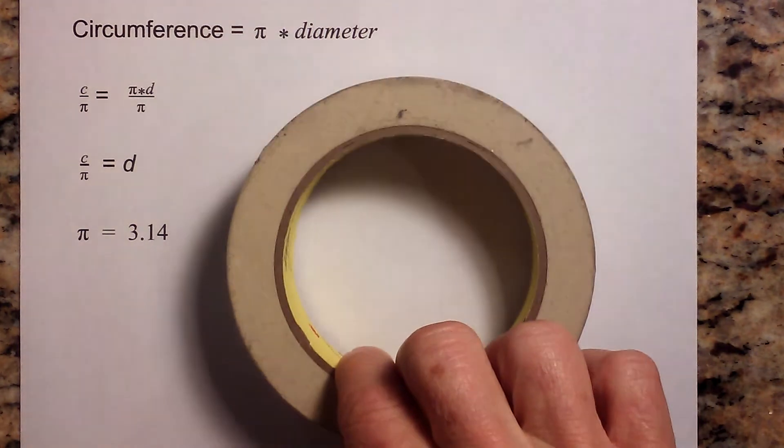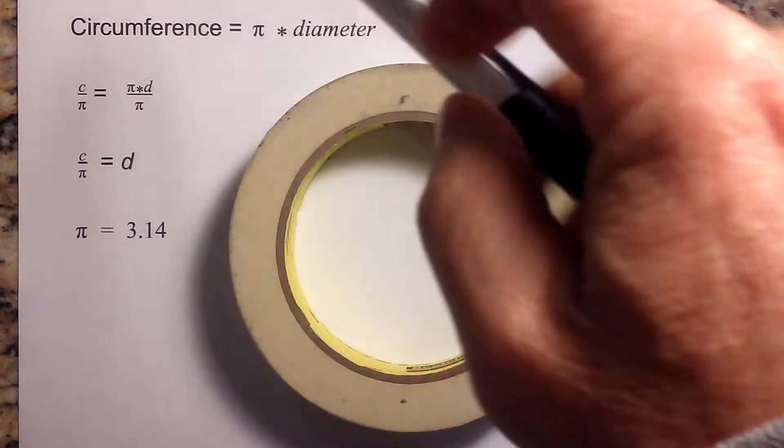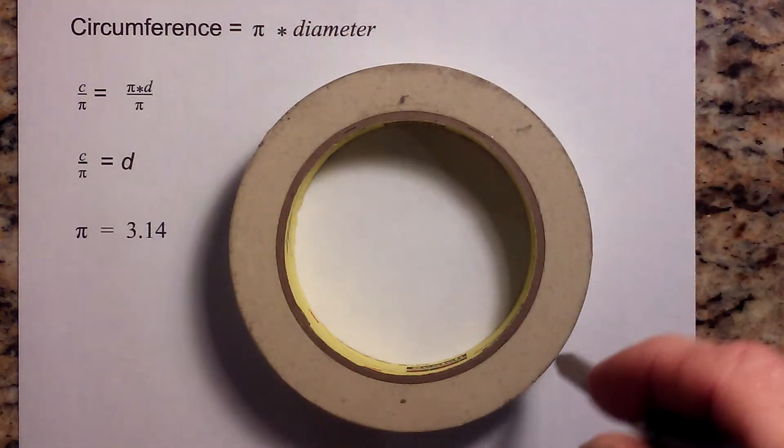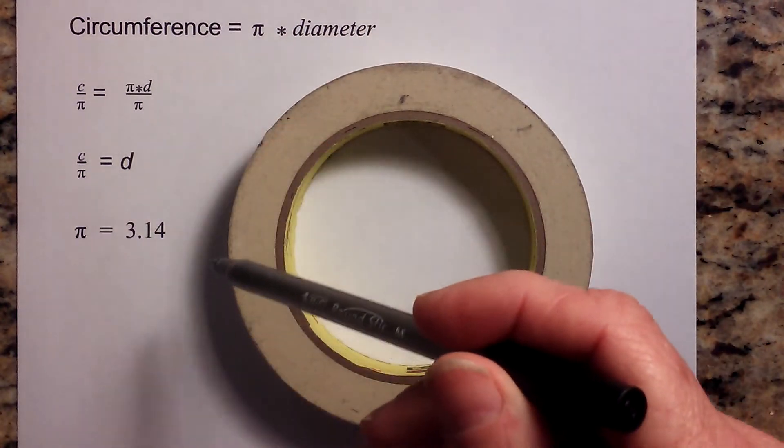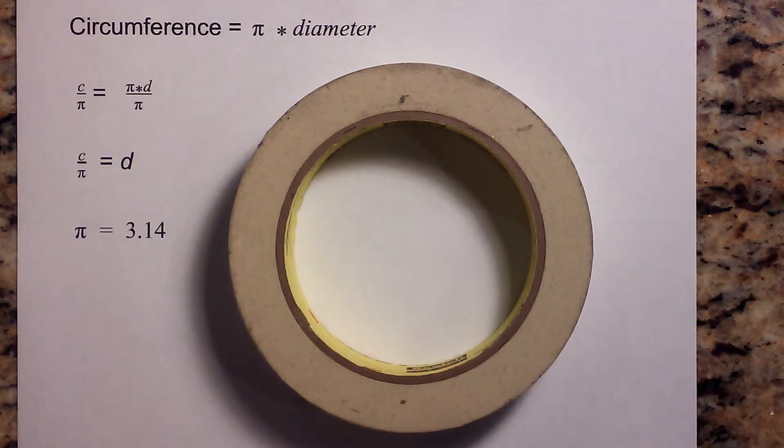Whenever you have a circle like this piece of tape or this roll of tape, the circumference is the distance all the way around this tape, and the diameter is the distance from this point to this point or the distance straight across.